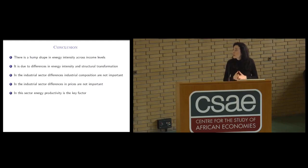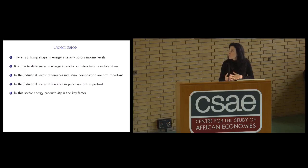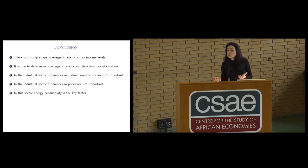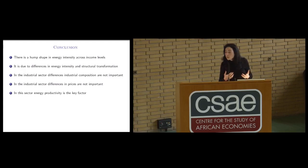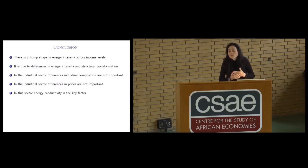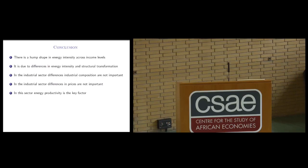Concluding: this simple paper shows there is a hump shape in energy intensity, structural transformation is important but not the whole story. What is really important is differences in technology — specifically the difference in technology in the industrial sector. Prices, at least in the short run in our simple production function model, do not play a major role. There is some technology that low income countries and emerging economies are lacking, causing them to consume a lot more energy to produce the same amount of output.